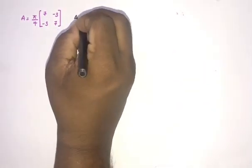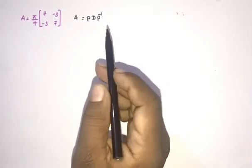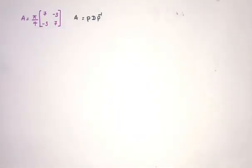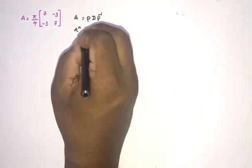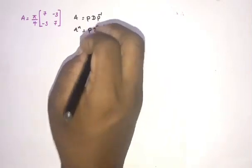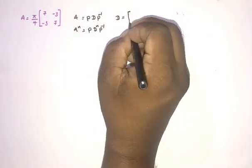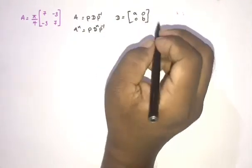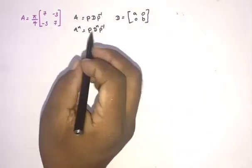Before solving this question, let's consider the concept of the sine of a matrix. We know the equation A = PDP⁻¹, where A is a diagonalizable matrix. We discussed this formula many times in previous videos, including the power of a matrix and the matrix exponential. We know that A to the n-th power equals P D^n P⁻¹, where D is the diagonal matrix with entries a and b.